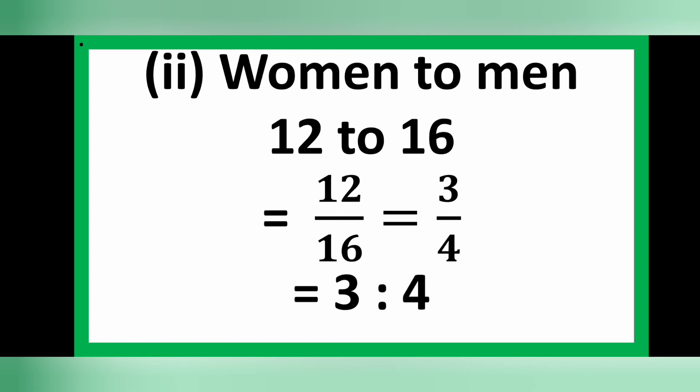For the second part, to find the ratio of women to men: there are 12 women and 16 men, so the ratio is 12 to 16, expressed as 12 over 16, which simplifies to 3 over 4. So the ratio of women to men is 3 to 4.